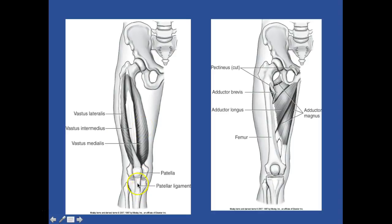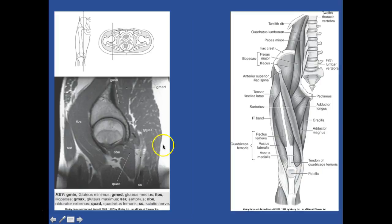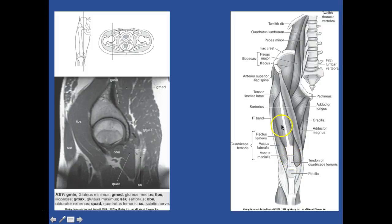So you have your patella, and then your patellar ligament. Starting up top, we have the 12th rib that comes down off the 12th thoracic vertebra. We have your quadratus lumborum with your psoas coming down to your iliopsoas - the iliacus part of that is on the wing. Right here is your sartorius, your gracilis is medial, the adductor longus, and your pectineus. We have the tendon of the quadriceps femoris, and you have your quadriceps muscles here, your IT band coming down.